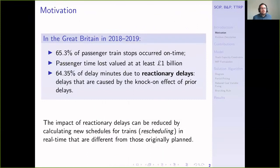The motivation for studying this problem is poor performance in terms of passenger railway services. I probably don't have to persuade most of you of the negative impacts of delays to trains. But one thing you may not realize is that around 64% of delay minutes in Great Britain last year were due to reactionary delays, which are caused by the knock-on effect of prior delays. The good news is that the impact of reactionary delays can be reduced by calculating new schedules for trains, which is referred to as rescheduling, in real time that are different from those originally planned.